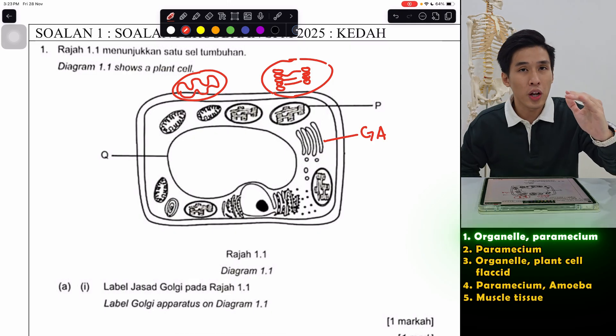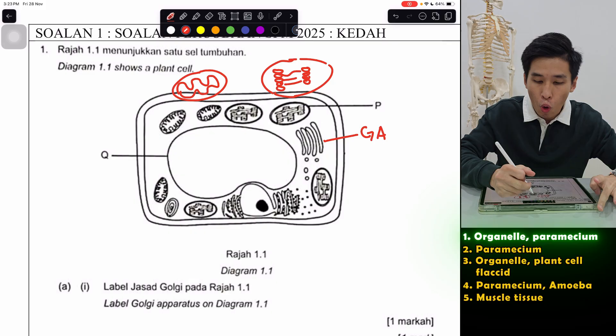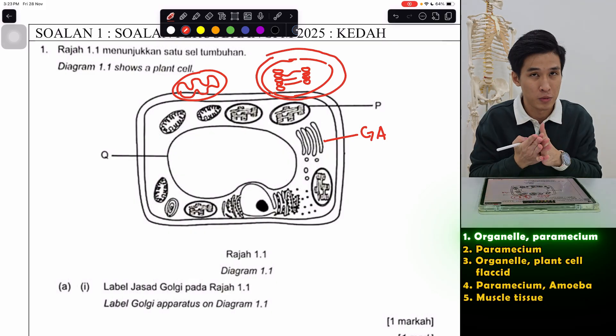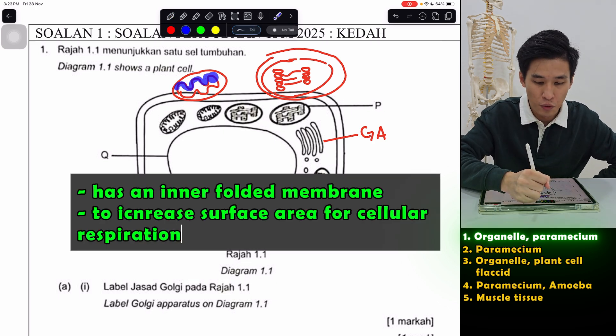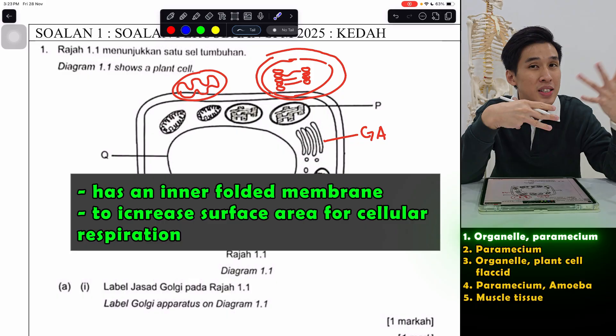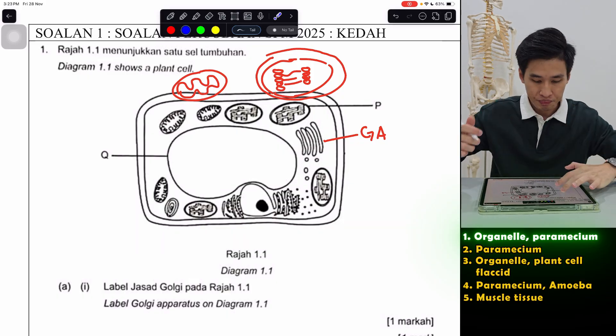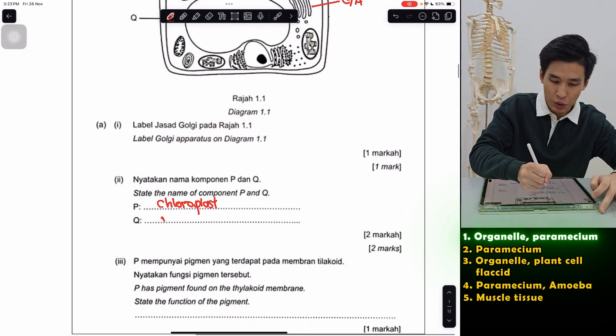And another thing they call you to ask, if there are similarities between mitochondria and chloroplast, remember, chloroplast and mitochondria, they both have a double membrane, two-layer membrane. Just that for mitochondria, they have an inner folded membrane. If they ask you why is it folded, it's to basically increase surface area for cellular respiration. Moving on, Q. This thing easy lah. Vacuole, of course. Big round thingy.